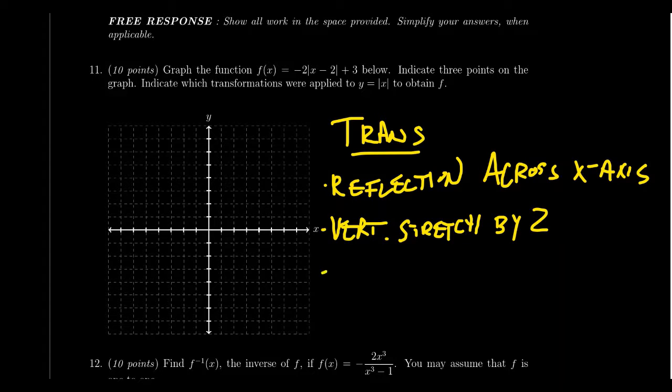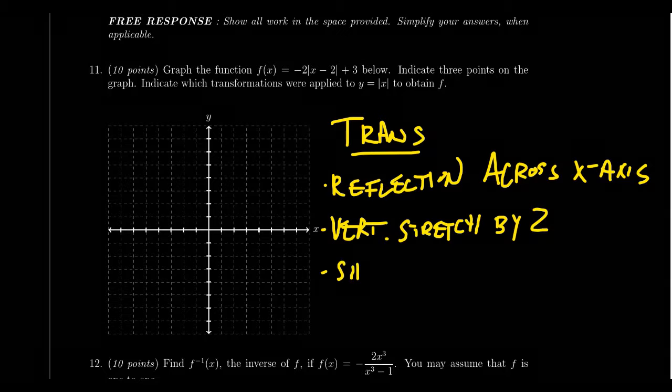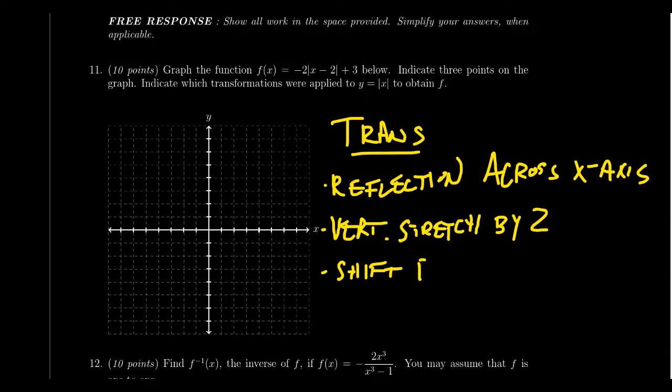The third transformation comes about from this negative 2 inside of the absolute value. This would be in the horizontal zone. So this is actually going to be a shift right by 2. And then lastly, this plus 3 right here indicates that you're going to have a shift up by 3. So you're going to want to make sure you list all four of these transformations.